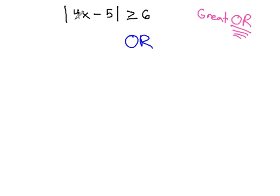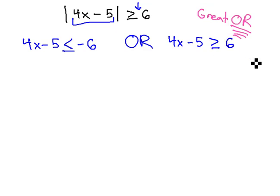We do this by taking what is inside the absolute value, the 4x minus 5, and making it less than or equal to negative 6, the negative of the number, or the 4x minus 5 would be greater than or equal to the positive number. Less than the negative or greater than the positive.